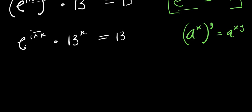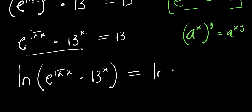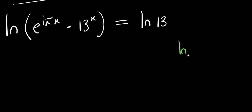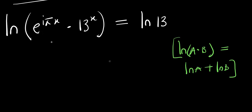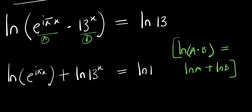From here we can apply natural log of everything: natural log of e to the power of i times pi times x times 13 to the power of x equals natural log of 13. Now, if you have natural log of a times b, this equals natural log of a plus natural log of b. So applying this here — this is my a and this is my b — we have natural log of e to the power of i times pi x, plus natural log of 13 to the power of x, equals natural log of 13.